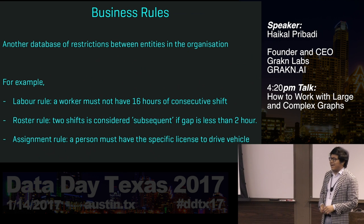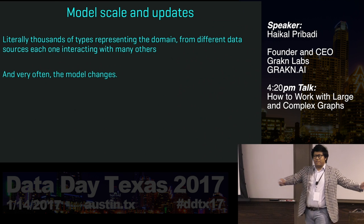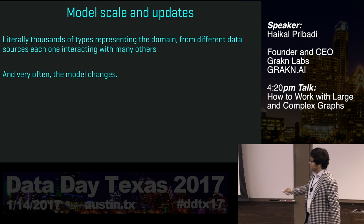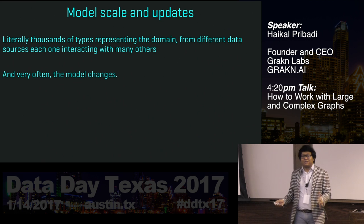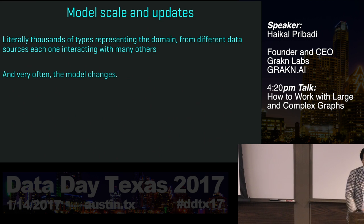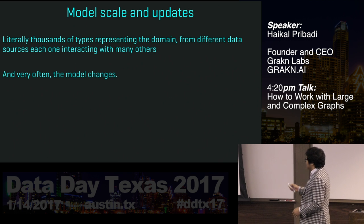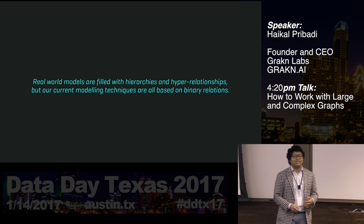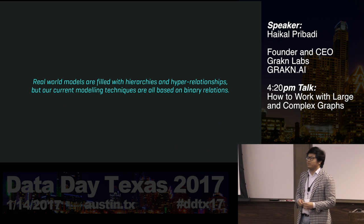We all make a bug or two every now and then, but when you're scheduling airports and train line systems, you cannot make one single mistake. As you collect a lot of information, the scale of the model grows, and the modeling problems multiply exponentially. Then your client three weeks later says they want to add another database — after confirming the business model would be stable for six months. So the fact is that real-world models are filled with hierarchies and hyper-relationships, but our modeling techniques these days are based entirely on binary relationships. That's the root cause of the problem with modeling complexity.